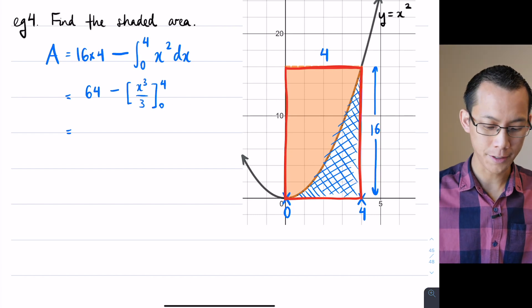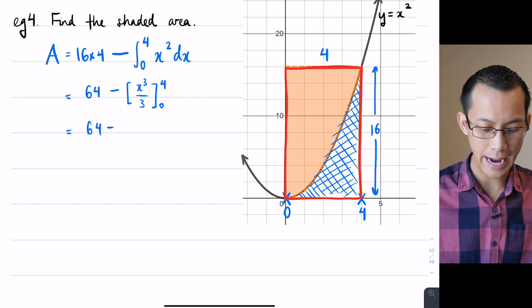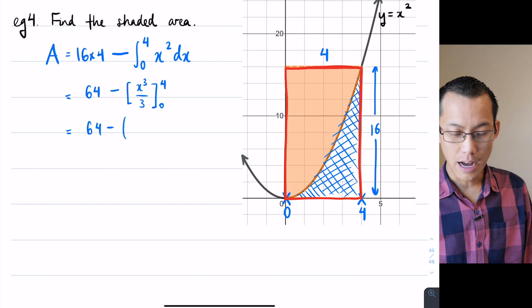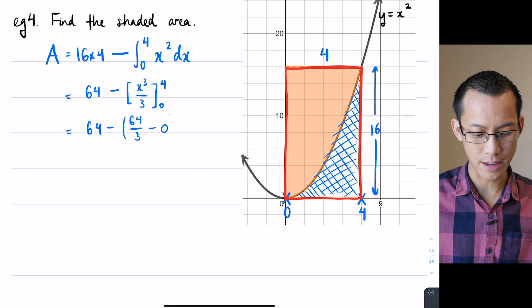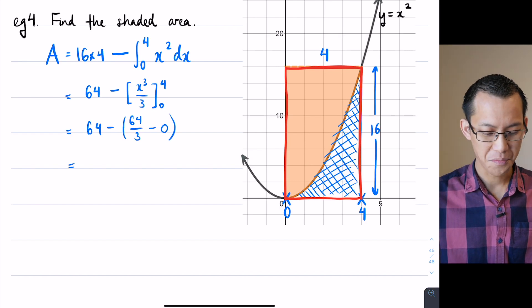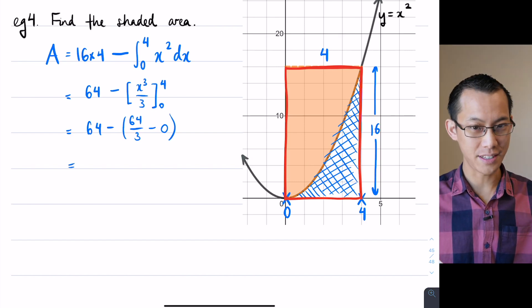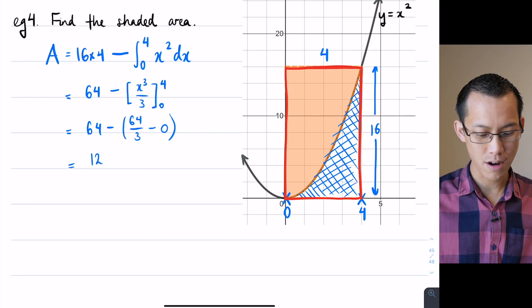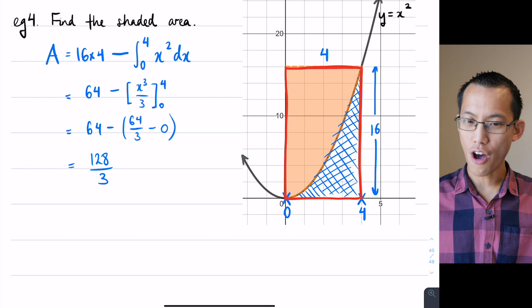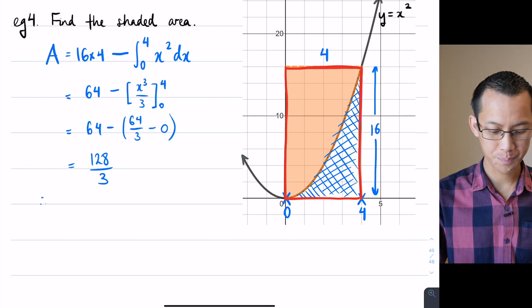also be 64 over 3, and then you take away 0. So 64 take away 64 over 3. You might be able to put that in your calculator, I'm pretty sure it'll be 128 over 3. So therefore the area is 128 over 3 units squared.